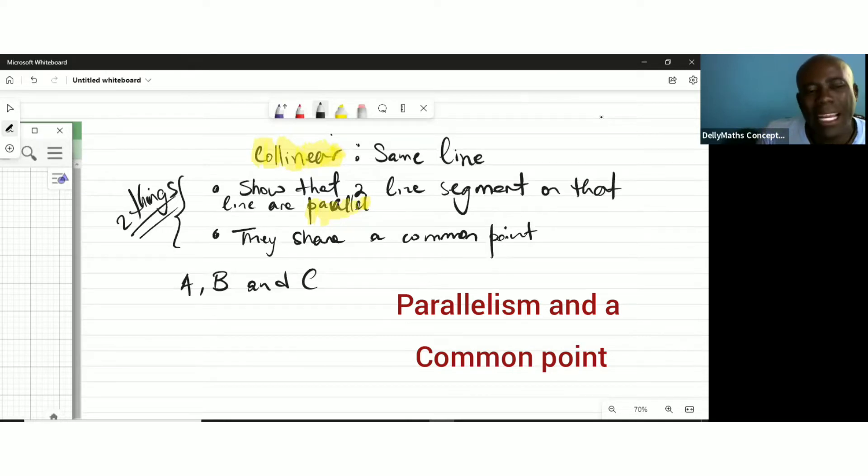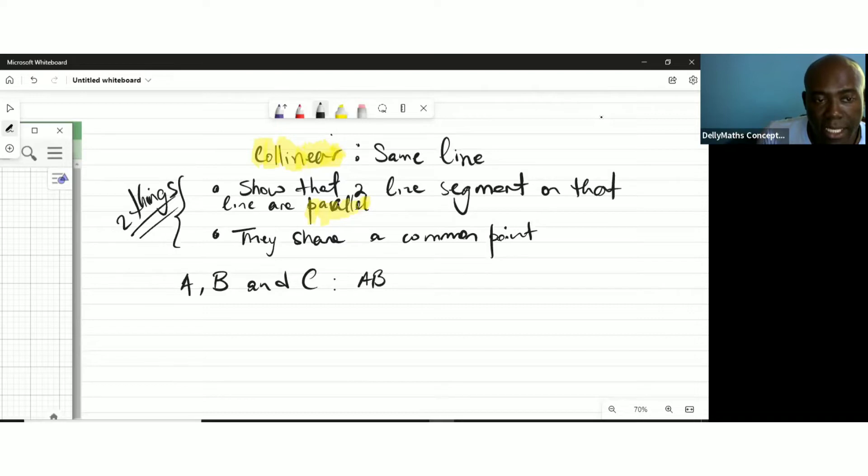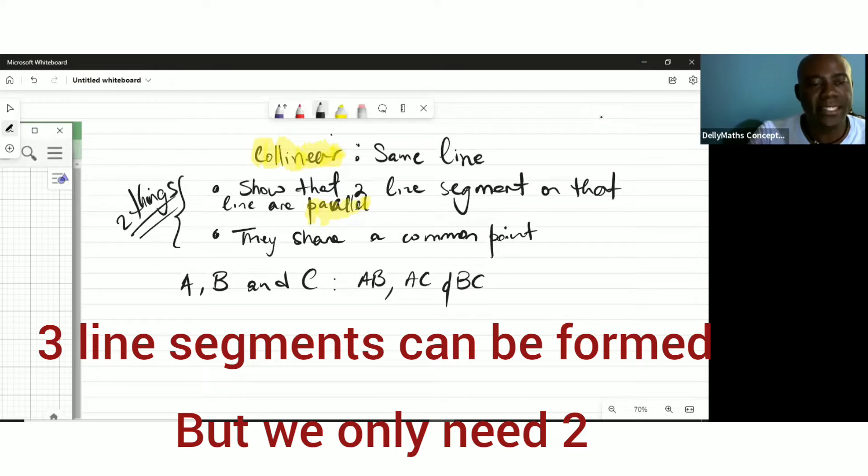How many line segments could you get from three points? You're able to make three line segments from this. For example, A to B is a segment, A to C is a segment, and B to C is a segment. Anytime you see three points, you can create three line segments.